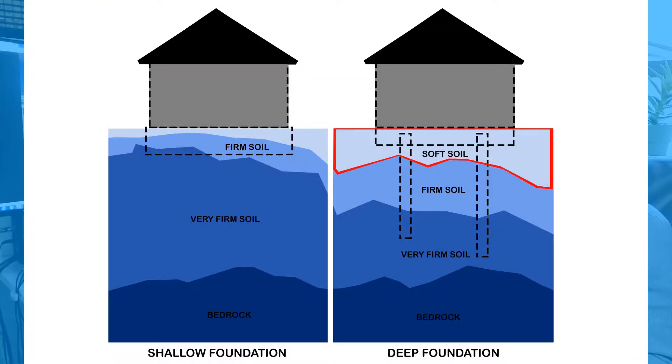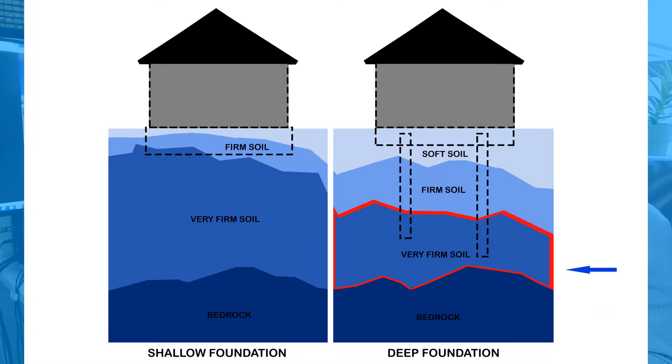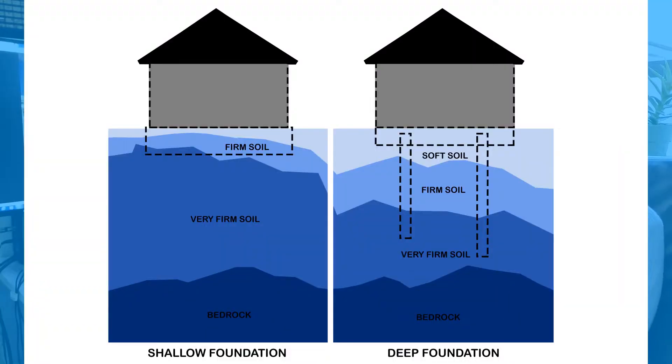In these cases, the foundation needs to go deeper, passing through that layer of unsuitable soil until reaching a layer of good support soil. This could be made of either rock, sand, or gravel — the type of soil that is able to support the necessary weight of the building. Now that we understand the two broad classifications of the foundation system, shallow and deep, let's see some examples.